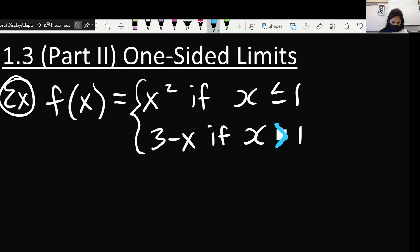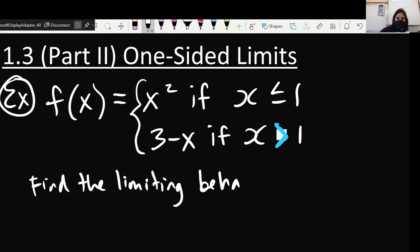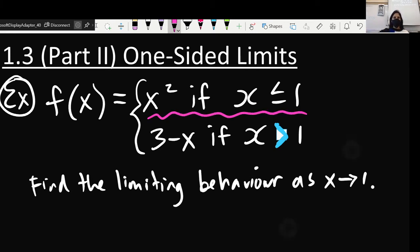So, we want to find the limiting behavior as X approaches one. Find the limiting behavior as X approaches one. Okay, so to do this or to look at this, let's split this up. So I'm going to basically color coordinate it so we can keep track of what's going on here.